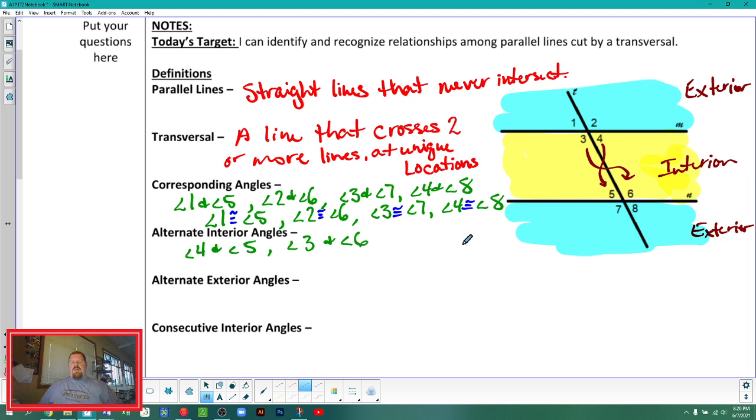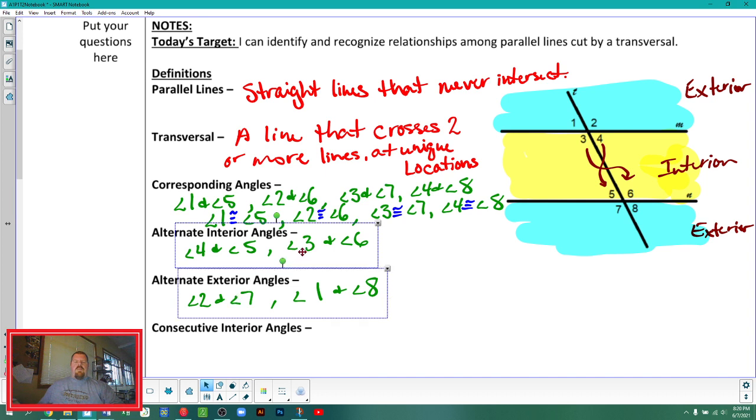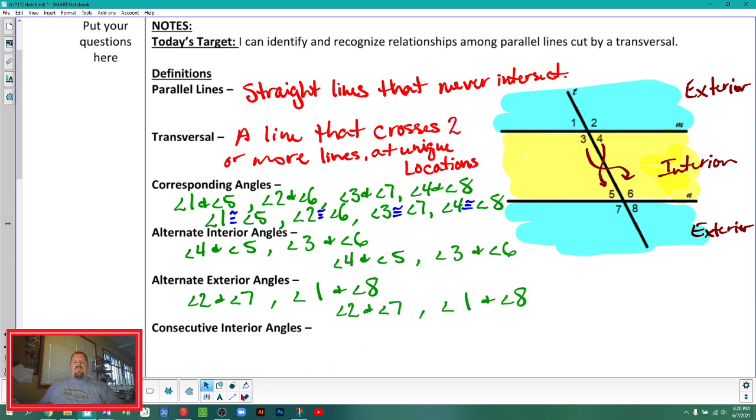And those are pairs of alternate interior angles. Alternate exterior angles are kind of the same thing, just on the outsides of the parallel lines. So I have 2 and 7. And I have angles 1 and 8.